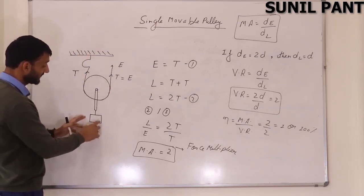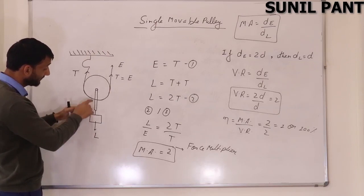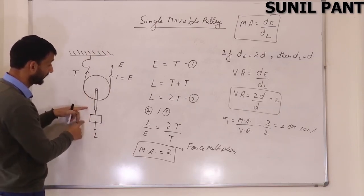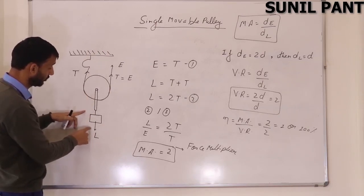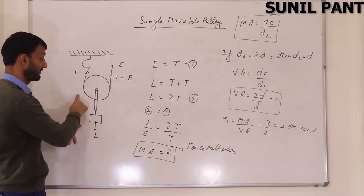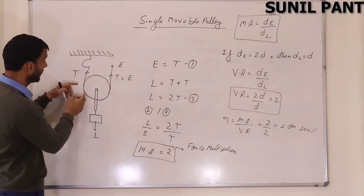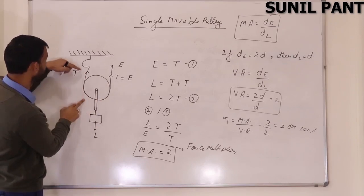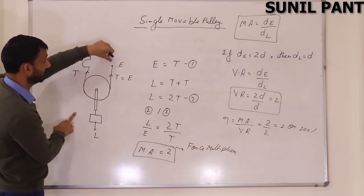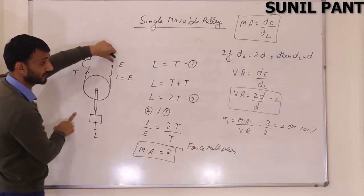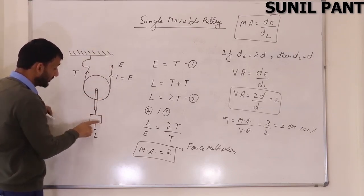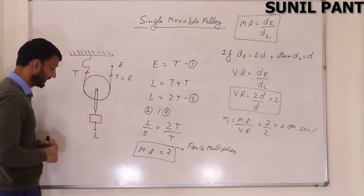Here the load is attached with the frame. Earlier the load was attached itself in the rim, but now a thread is being passed through the rim, one part of the rim is being fixed, and from the other part you have to apply an effort, and the load is being fixed at the frame.